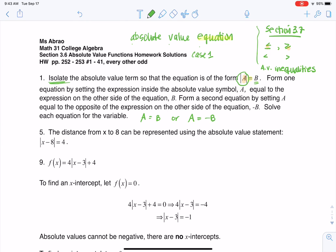So you set up two equations. That's how you solve something with an absolute value equation. So set up two equations and solve both. I'm going to just get this in here, solve both. All right, so that's why you have me saying here, form one equation by setting the expression inside the absolute value symbol equal to B, and then form the second equation by setting that A equal to negative B, and then solve each equation.